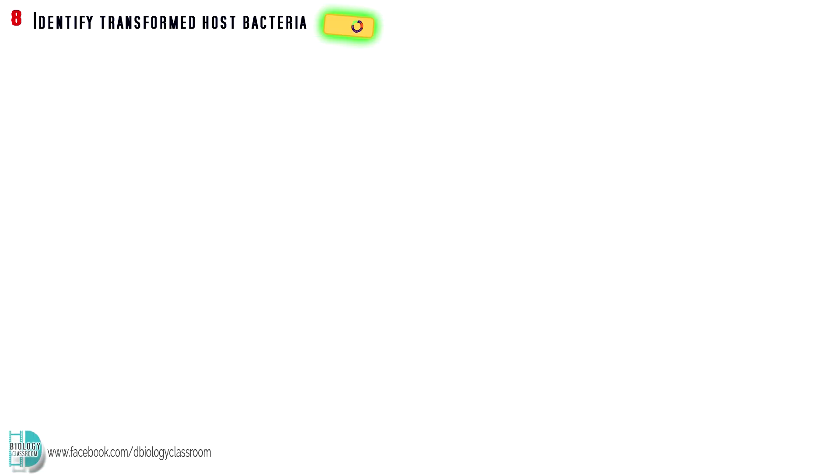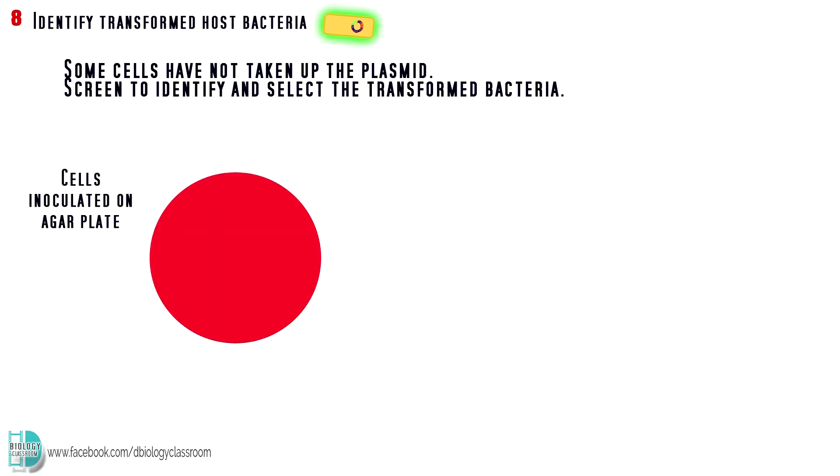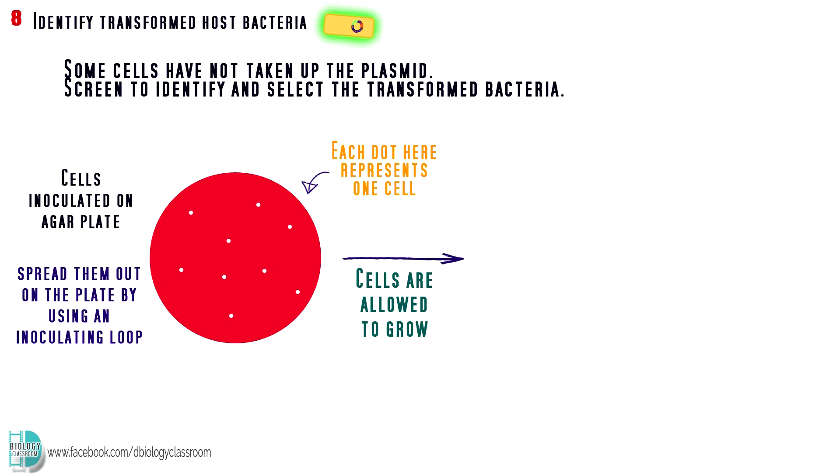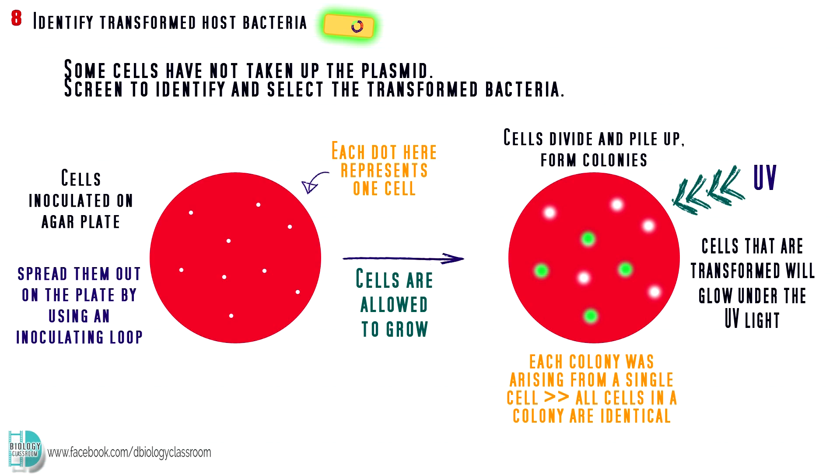Not all of the bacteria went through the transformation process are successfully transformed. A lot of them might not have taken up the plasmid. So, a screening process is needed to select the transformed bacteria. The cells are inoculated on an agar plate. They are spread out on the plate by using an inoculating loop, so they are well separated. They are allowed to grow for a period of time. As the cells divide and pile up, they become visible to naked eyes. These are known as bacterial colonies. Since each colony was arising from a single cell, all cells in a colony are identical. In other words, each colony is either transformed or not. Since the plasmid consists of a marker gene, which is the gene for fluorescent protein, the colonies that are transformed will glow under the UV light. They will be taken and grown in a culture.